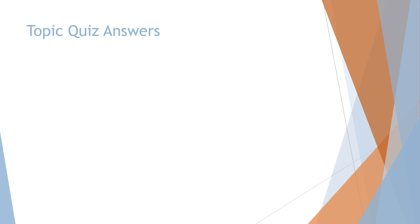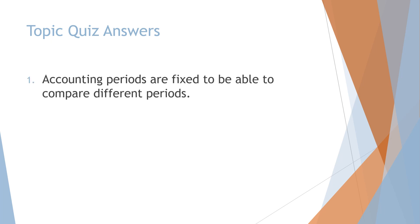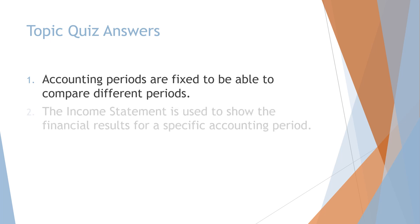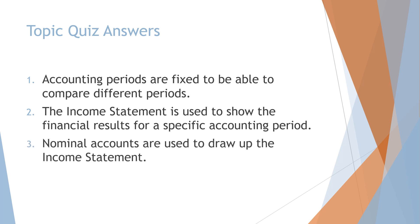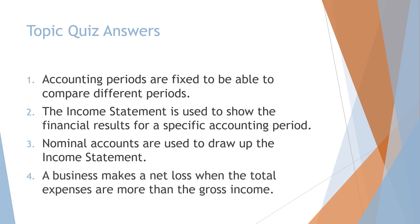Topic quiz answers. Number 1: Accounting periods are fixed to be able to compare different periods. Number 2: The income statement is used to show the financial results for a specific accounting period. Number 3: Nominal accounts are used to draw up the income statement. Number 4: A business makes a net loss when the total expenses are more than the gross income.